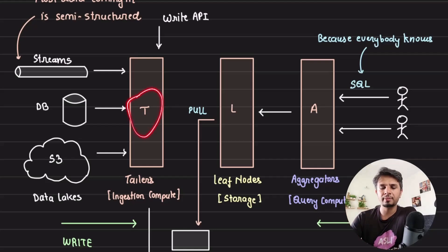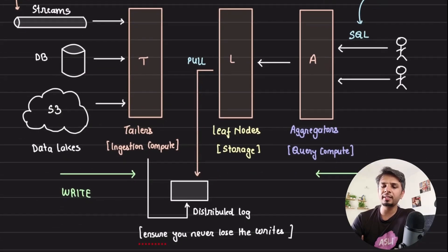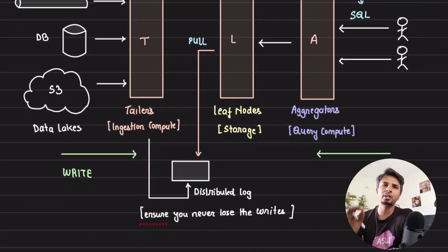Let's talk about tailors. The job of the tailor is to pull data from streams, from transactional systems, from S3, or from your data lakes and data warehouses and put them into leaf nodes. They also have a write API that allows you to ingest data in Rockset. Instead of directly writing to the leaf node, the tailor accepts the write and immediately writes it to a distributed log. This is just to ensure that you never lose the write that has happened on Rockset.